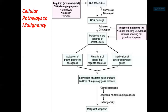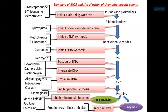Normal cells will stop dividing if there is a mutation in DNA. Cancer cells, however, will continue to divide even with mutation. Due to DNA mutation, cancer cells ignore the signals to start and stop division, and they can communicate with neighboring cells and continue to grow to form tumors. This is a short summary of the many chemotherapeutic agents used, and you can understand how the normal cell cycle relates to the modes of action of different drugs.